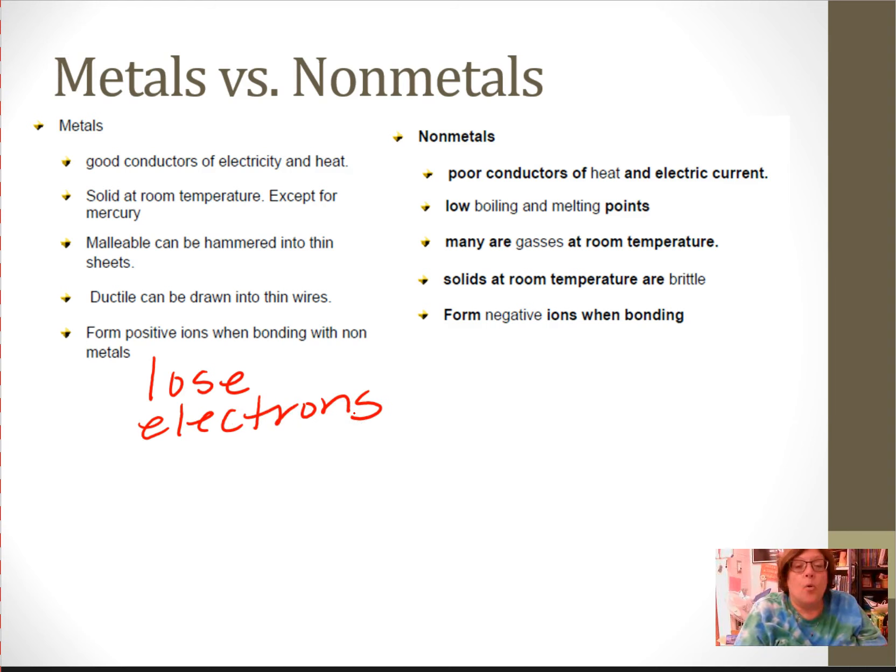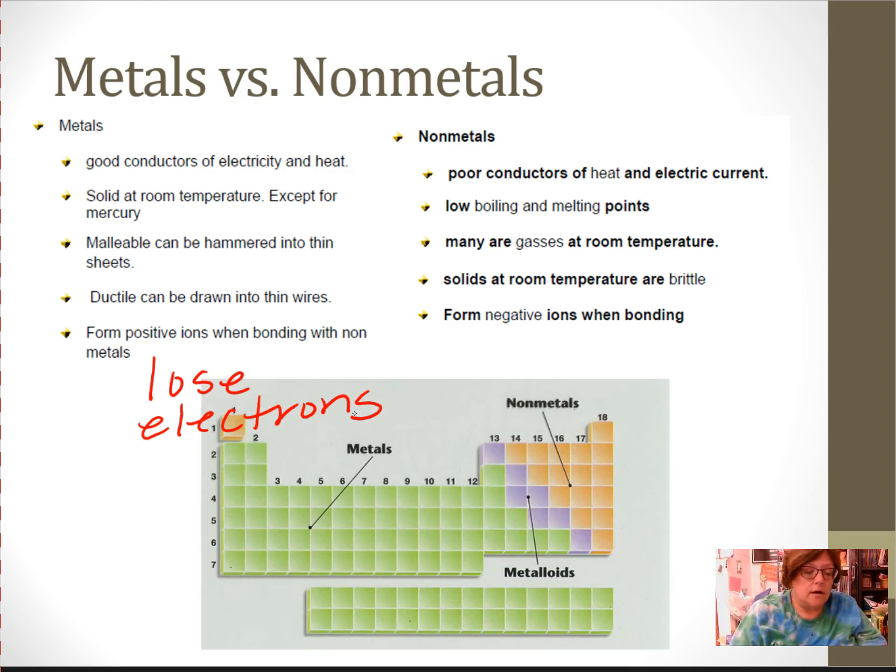Non-metals are poor conductors of heat and electricity, and that's down underneath transition metals. They have low boiling points and melting points. Many are gases at room temperature. The ones that are solid are brittle, and they form negative ions. And here's a nice little diagram.